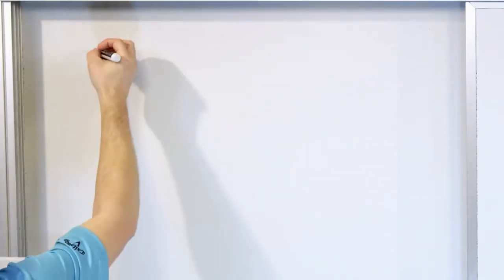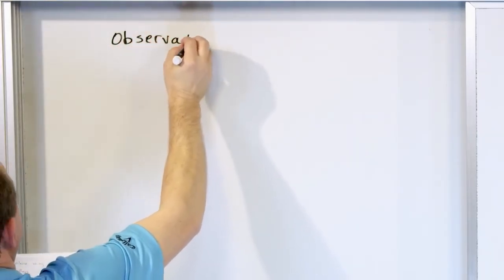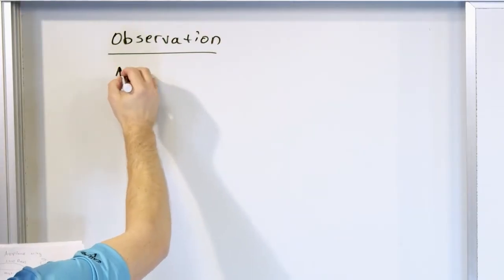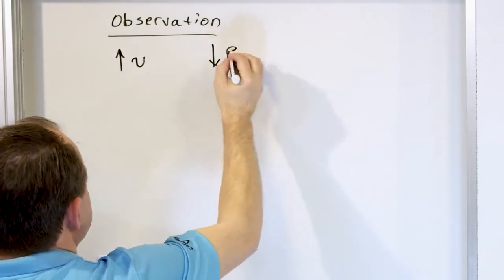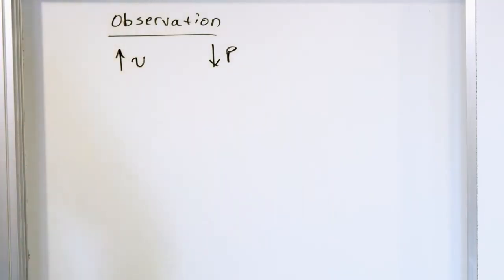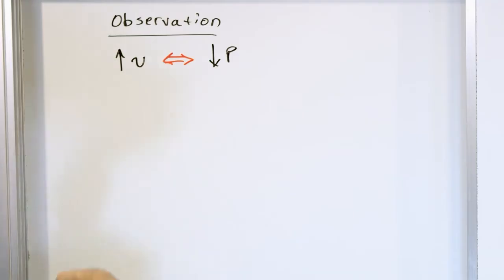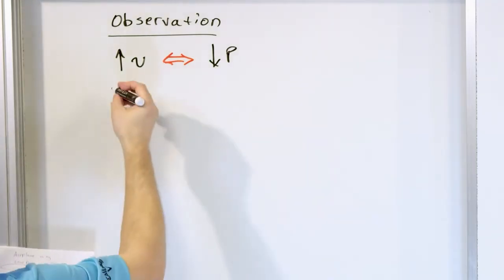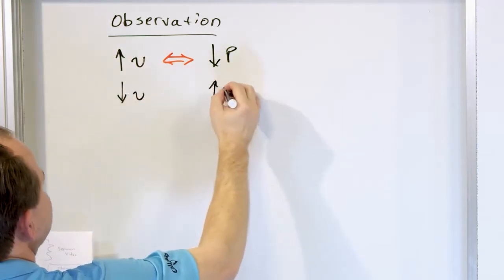So the observation that we had — the one we really want to explain — is that when we have a high velocity, this must correspond to a low pressure. Because that's the only way we can think to describe it, and if this is true, it would explain everything we saw. And correspondingly, a low velocity corresponds to a high pressure.